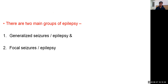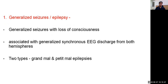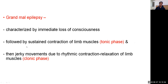There are two main groups of epilepsy: generalized seizures and focal seizures. Generalized seizures involve loss of consciousness and are associated with generalized synchronous EEG discharges from both hemispheres. They are of two varieties: grand mal epilepsy and petit mal epilepsy. Grand mal epilepsy is characterized by sudden loss of consciousness, followed by sustained contraction of limb muscles — the tonic phase — which is then followed by jerky movements due to rhythmic contraction and relaxation of limb muscles — the clonic phase.